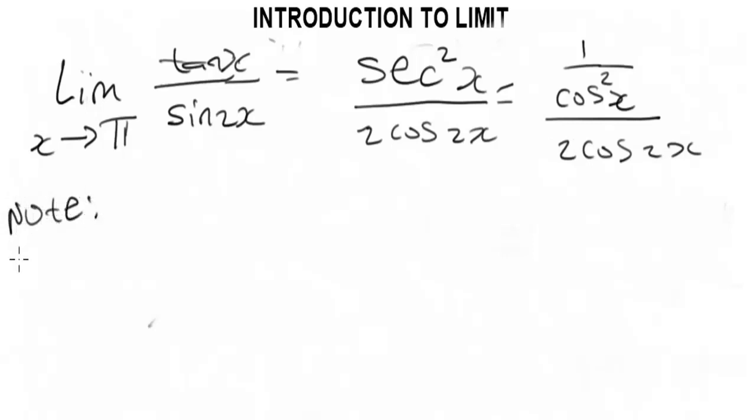Cosec is 1 over sin, sec is 1 over cos, and cot is 1 over tan. So it's very important to take notes of this in case of solving problems involving trig ratios.